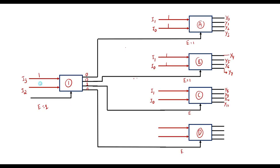If I3=1 and I2=1, the fourth output line is high, connected to decoder D, so only decoder D is active. With inputs I1 and I0: if 0,0 then Y12 is selected; if 0,1 then Y13; if 1,0 then Y14; and if 1,1 then Y15 is selected.